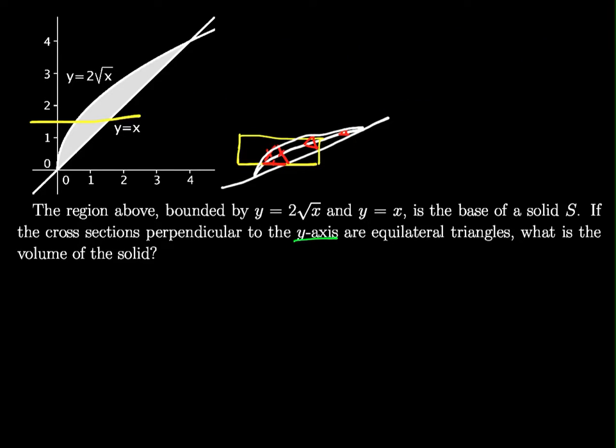As before, we have an equilateral triangle s, s, s. We know that the height is s root 3 over 2, so the area in terms of s will equal s squared root 3 over 4. If you didn't watch the last video, it's because we have a 30-60-90 right triangle for this.